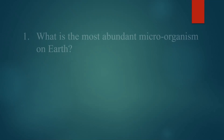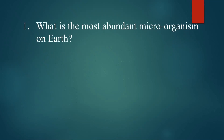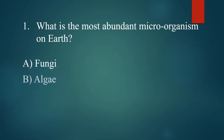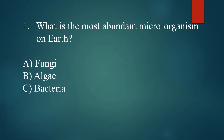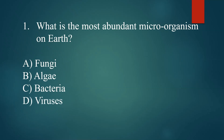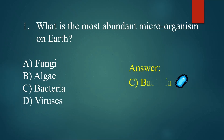What is the most abundant microorganism on Earth? A. Fungi. B. Algae. C. Cyanobacteria. D. Viruses. Answer: C. Cyanobacteria.